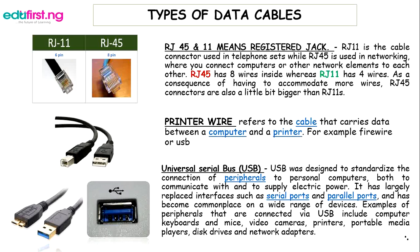The common one we all know is the Universal Serial Bus or USB. USB was designed to standardize the connection of peripherals to personal computers — both to communicate with and to supply electric power. It has largely replaced interfaces such as serial ports and parallel ports. Examples of peripherals connected via USB include computer keyboards, mice, video cameras, printers, portable media players, disk drives, network adapters, and even your phone when copying files to your laptop.